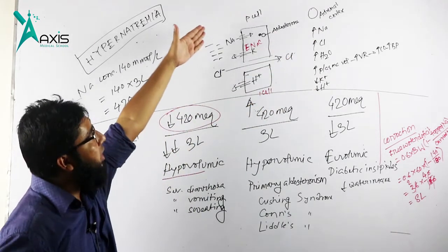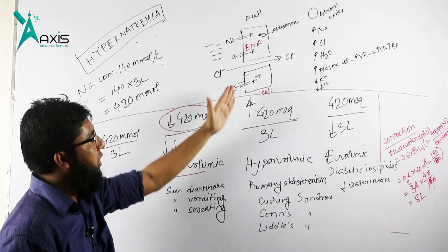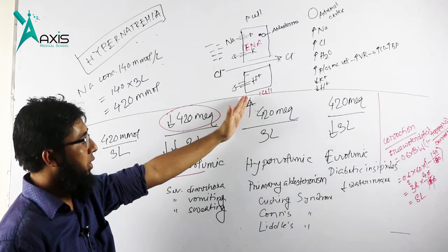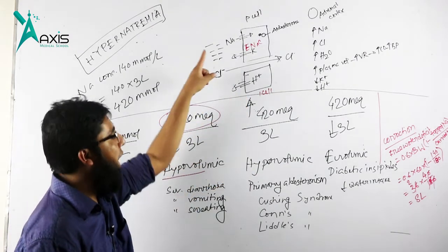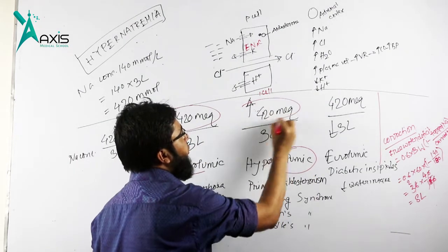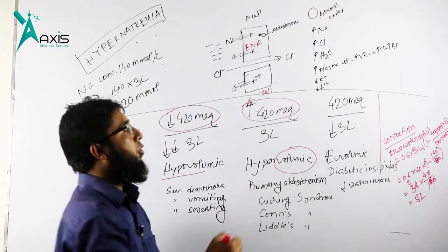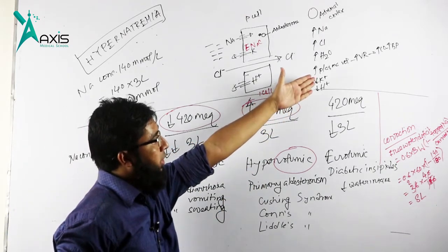So we can see when renin angiotensin mechanism is activated, there is increased sodium. This is called hypervolemic hypernatremia. This volume indicates the volume of sodium, not volume of plasma.